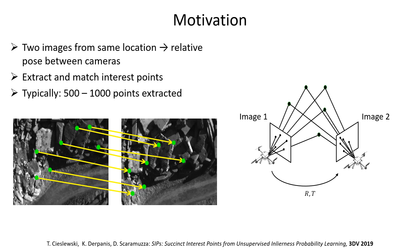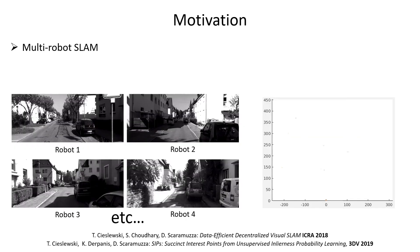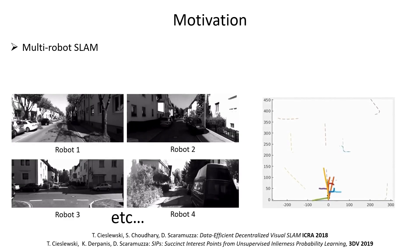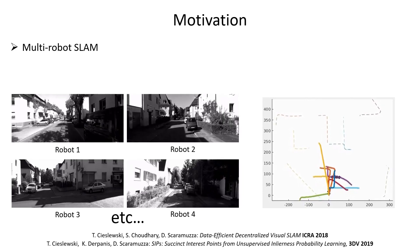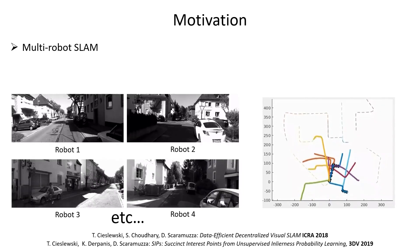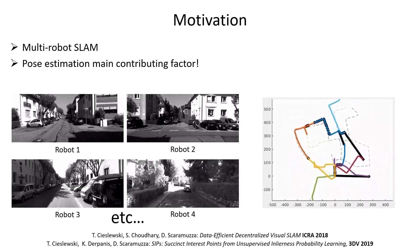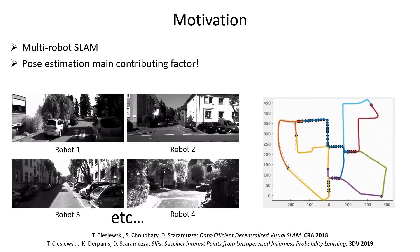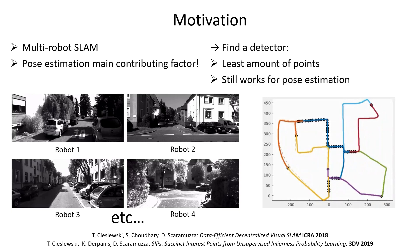But this can be problematic in certain cases. Specifically, this work was motivated by multi-robot SLAM. Here, relative pose estimation is needed for the robots to establish relative transformations between their trajectories. The resulting data transmission turns out to be the main contributing factor to the overall bandwidth use. This transmission is directly proportional to the amount of extracted interest points, so we set out to find a detector that will extract the least amount of points while still working well for pose estimation.